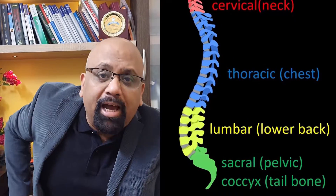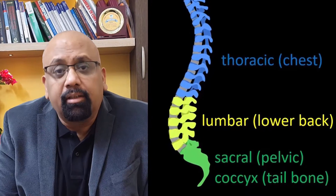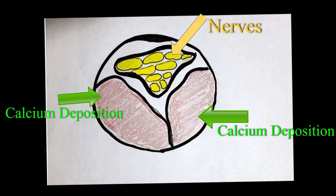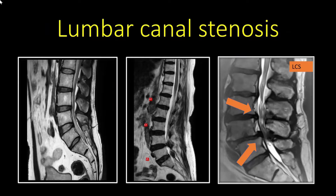The spine in our lower back is called the lumbar spine, and as age advances it undergoes degeneration. Degeneration is not a disease — it is an age-related process by which there is deposition of calcium, and the space inside the spinal canal becomes narrower and narrower.